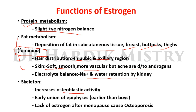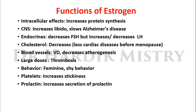On the skeleton, estrogen increases osteoblastic activity and causes early union of the epiphysis — occurring earlier in females than in males. Lack of estrogen after menopause causes osteoporosis.